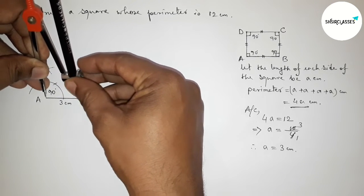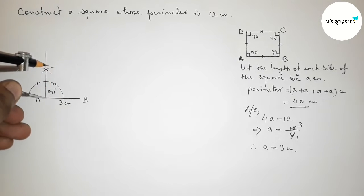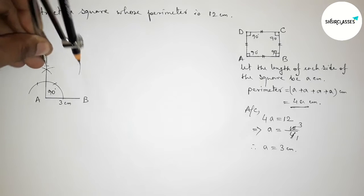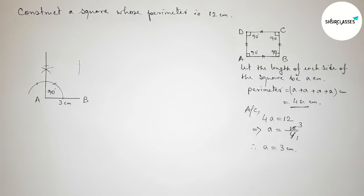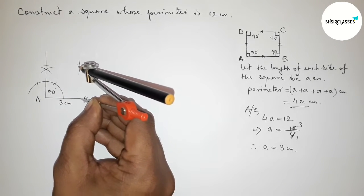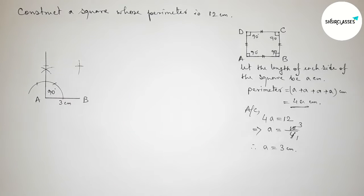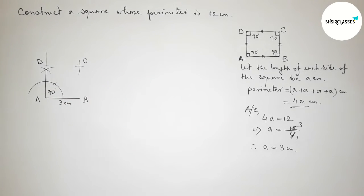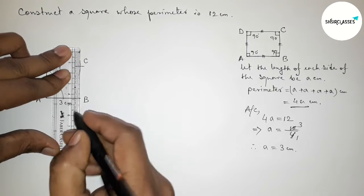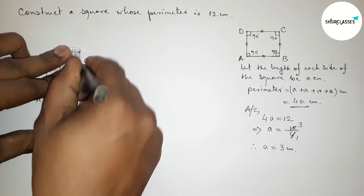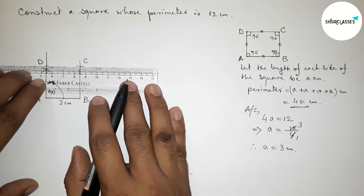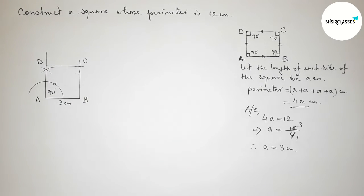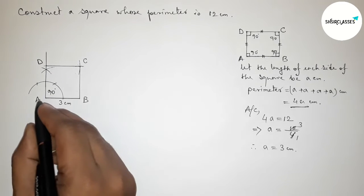Taking the length AB equals 3 centimeters using the compass and marking point D on the perpendicular at A. Then with the same compass length, drawing arcs from B and D to locate point C, and marking points C and D. Joining B to C and C to D to complete the square.